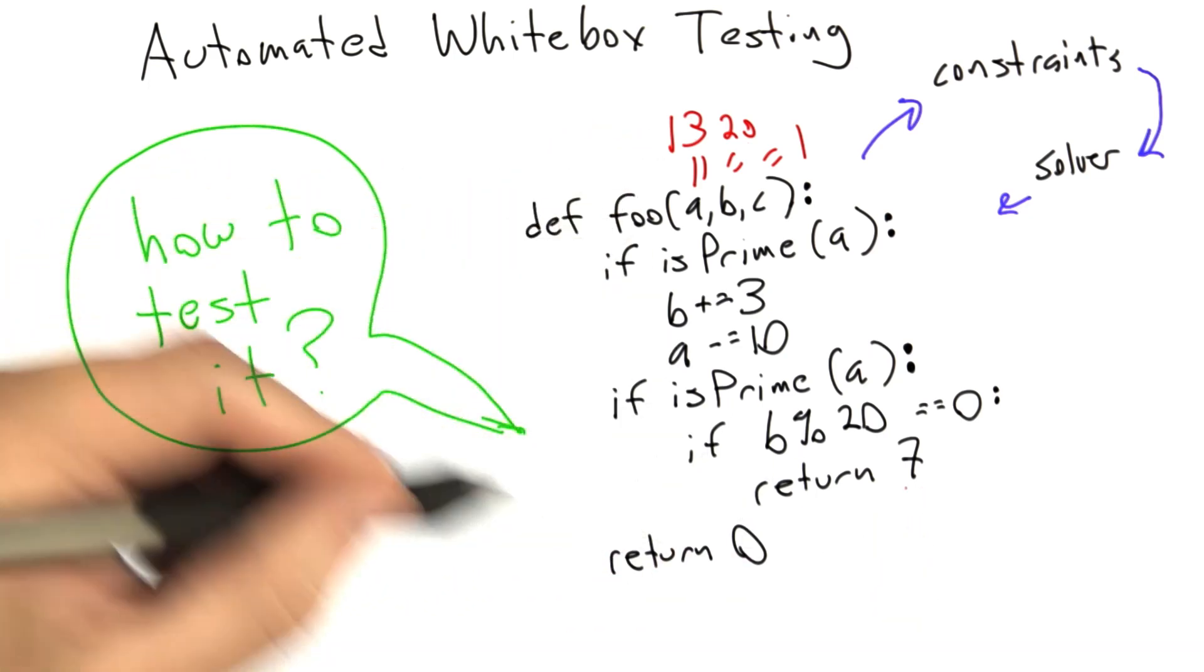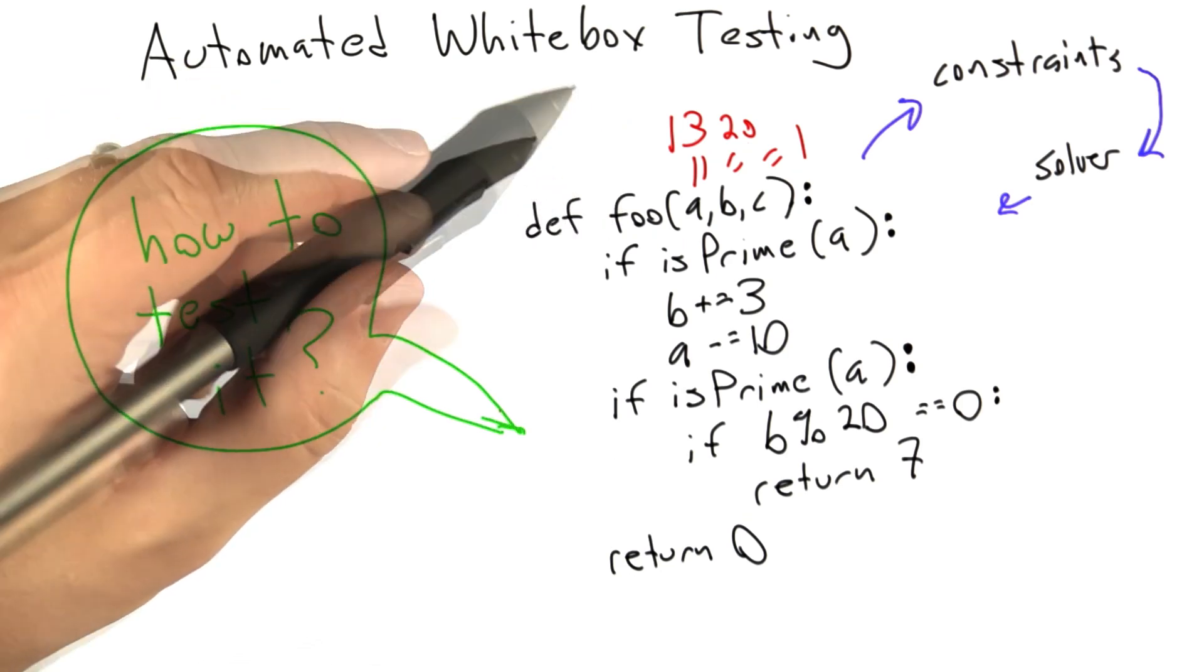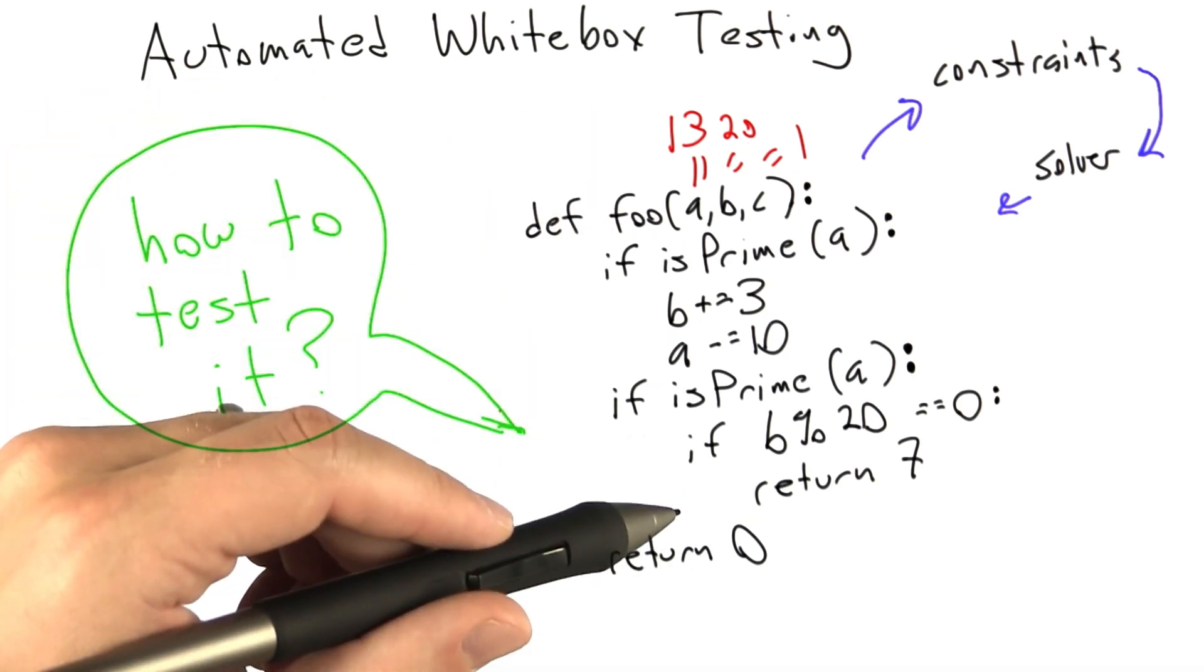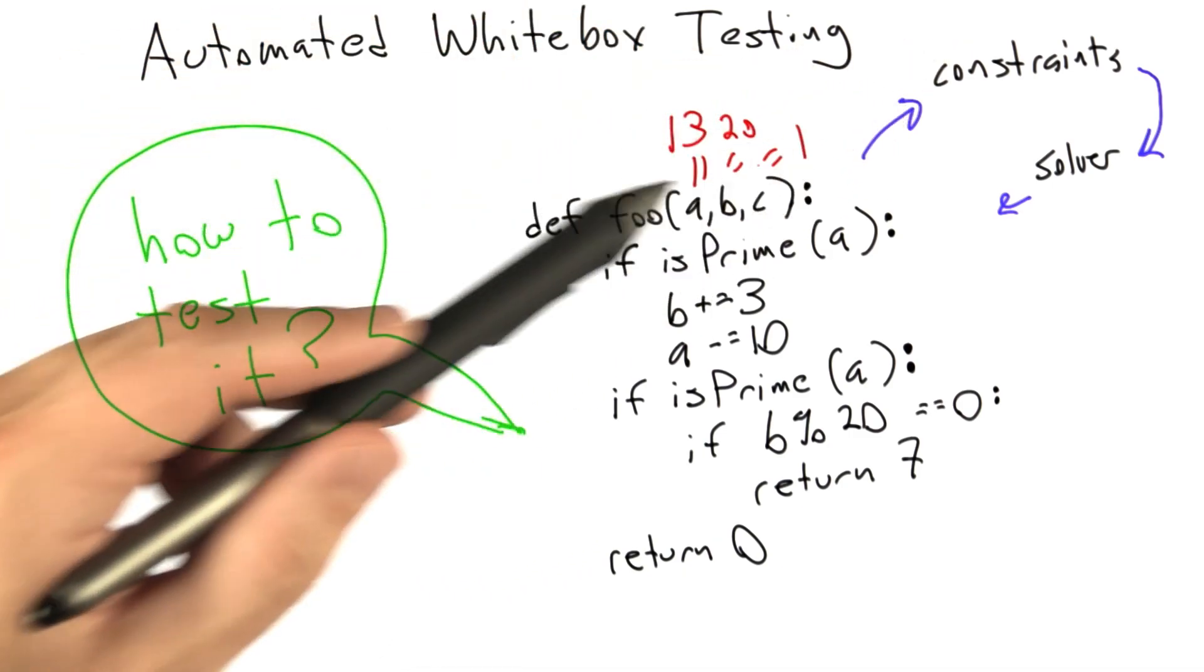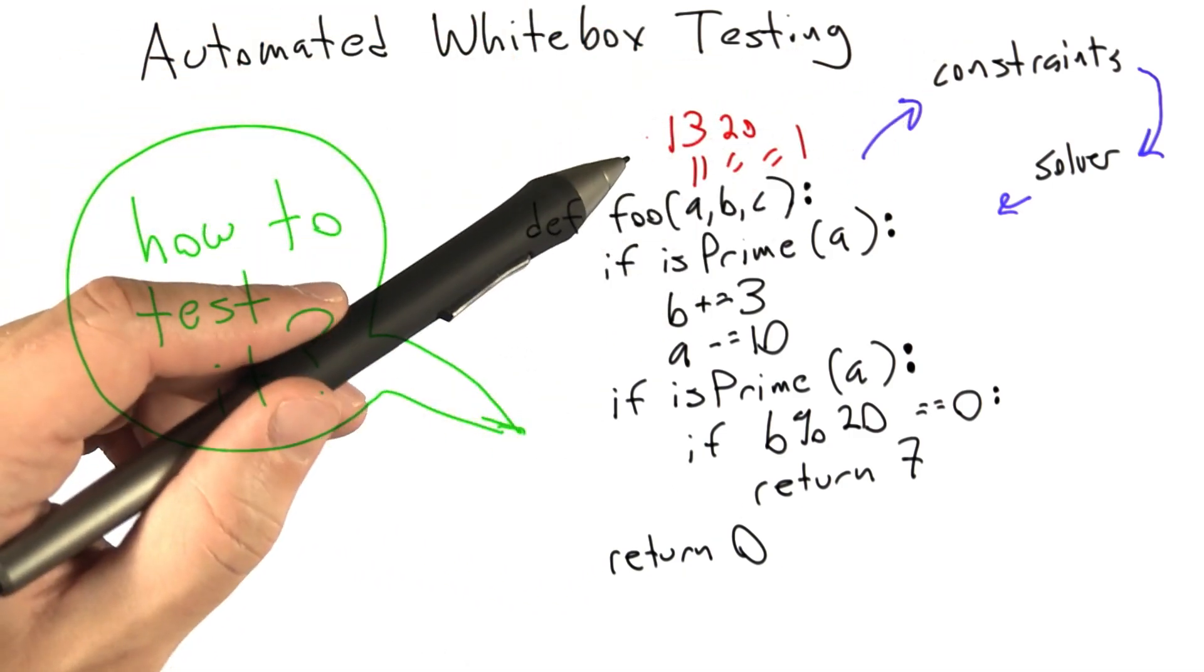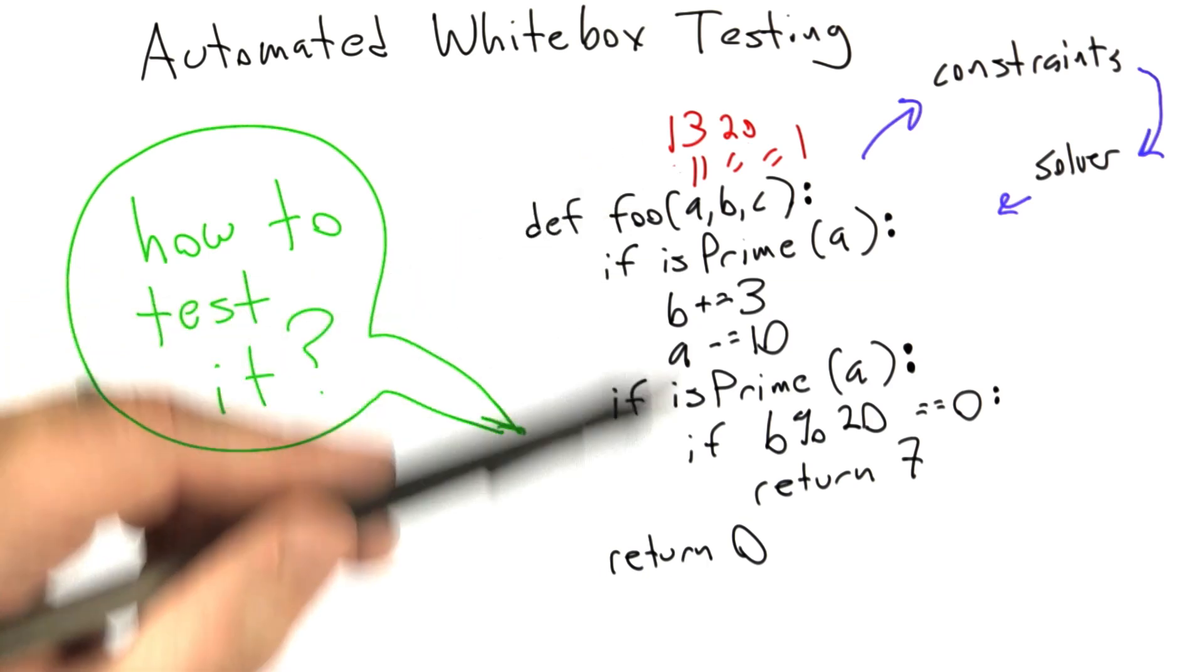This time returning 7. By iterating this process multiple times, by running the code and then using what it learned to build up a set of constraints to explore different paths, we can generate a set of test inputs that achieves good coverage for the code under test.